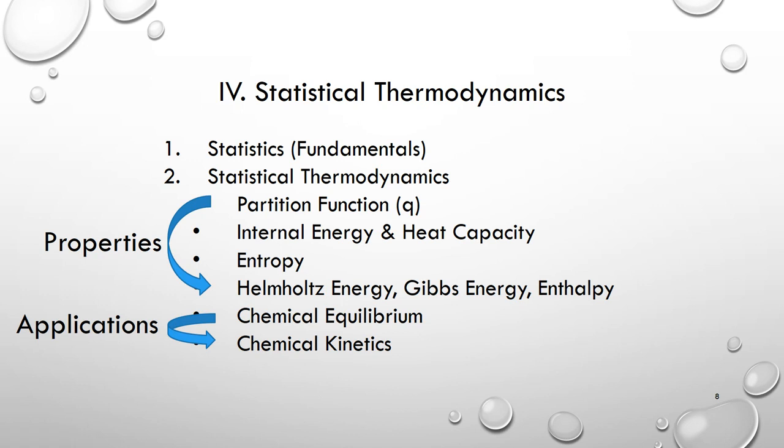The fourth part is statistical thermodynamics, which is quite math intensive. First, we introduce some probability theory and statistics. Those are the fundamentals. And then, we move on to statistical thermodynamics. First, we introduce the concept of partition function q. And then, we express internal energy, heat capacity, entropy, Helmholtz energy, Gibbs energy, and enthalpy in terms of this q. And finally, we get back to thermodynamics. We talk about chemical equilibrium. And also, some kinetics at the end of the book.